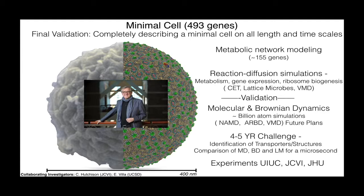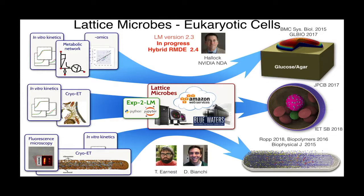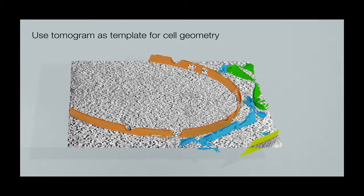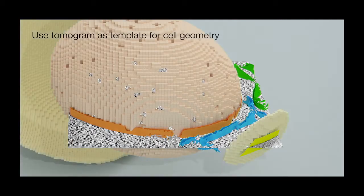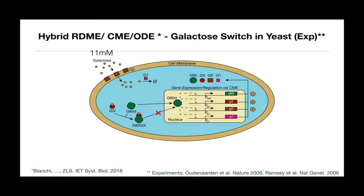With our program, called Lattice Microbes, what's very important is using the experimental information. We work with experimentalists using Jupyter notebooks so we can quibble over every data point. For the eukaryotic cells, when possible we try to start with a tomogram. Here you see a slice showing nuclear pore complexes, some ER, mitochondria, and the black dots which are ribosomes — there are about 150,000 of them. You can build up a whole cell; in our hands it looked like a yeast cell. We can even look at a reaction to check what we're doing.